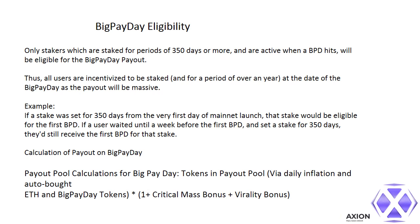Example: If a stake was set for 350 days from the very first day of mainnet launch, that stake would be eligible for the first BPD. If a user waited until a week before the first BPD and set a stake for 350 days, they'd still receive the first BPD for that stake.